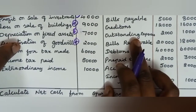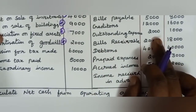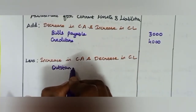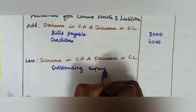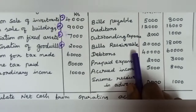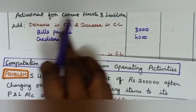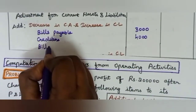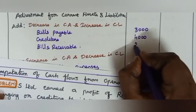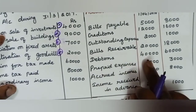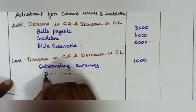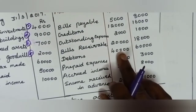Outstanding expenses is a current liability — decrease of 1,000, so we deduct it. Bills receivable is a current asset — decrease of 2,000, so we add it. Debtors is a current asset — increase of 20,000, so we subtract it. Prepaid expenses is a current asset — increase of 1,000, so we subtract it. Accrued income is a current asset — increase of 3,000, so we subtract it.